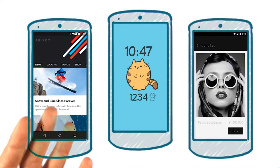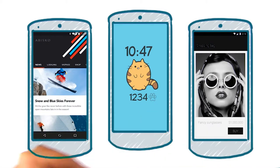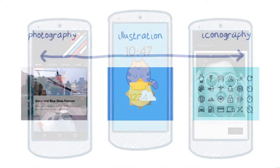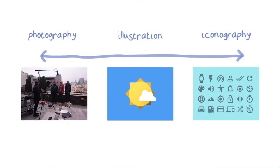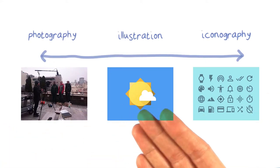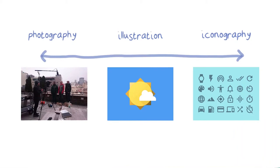If you're chic and refined, then tell that story visually. But what types of imagery can you use, and when are they appropriate? The major classes of imagery you can use fall somewhere on a spectrum from photography through illustration to iconography. Let's take a look at each of these and when they might be appropriate.